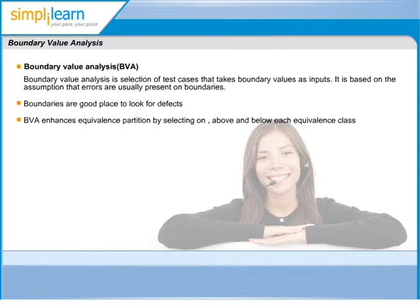Similarly, for the positive range, we have a lower boundary of 1 and upper boundary of 100. The values, therefore, needed to test these boundaries will include 0, 1, 2, 99, 100, 101.